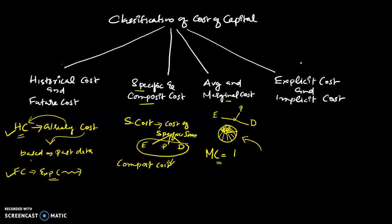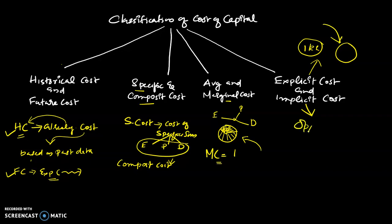Then we have explicit and implicit cost. Implicit cost is the rate of return which can be earned by investing the funds in an alternative investment — it represents the opportunity cost of using capital.